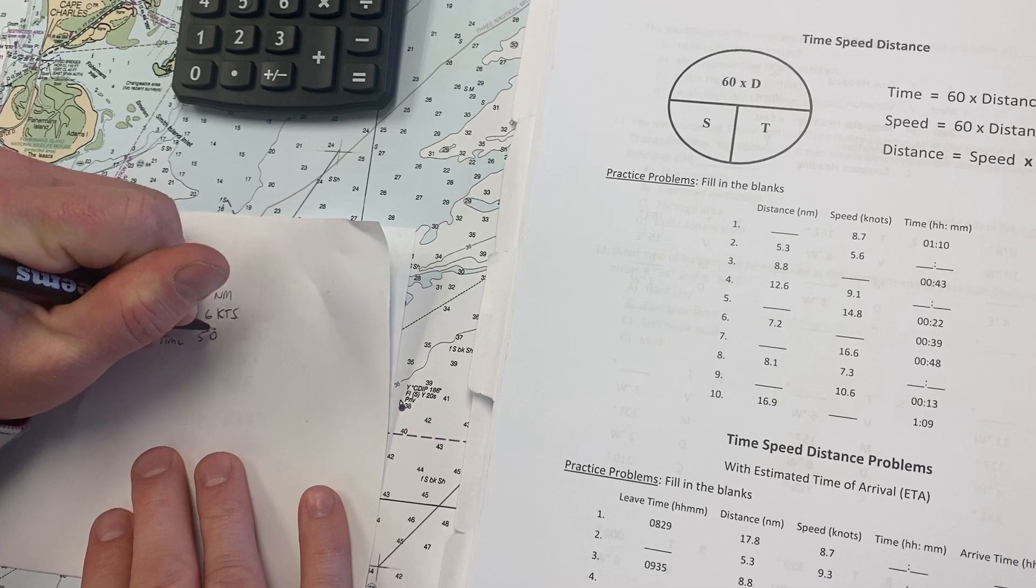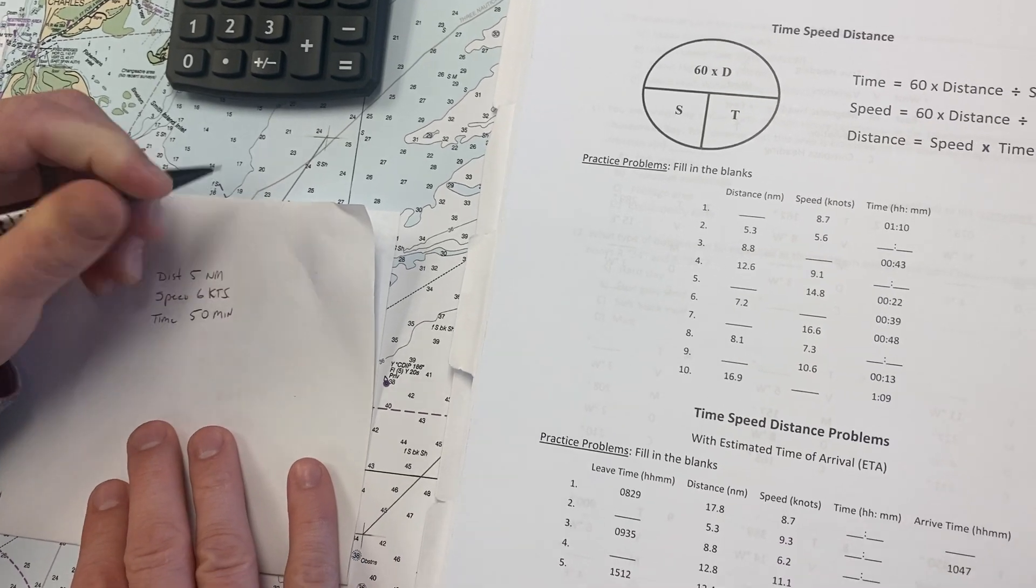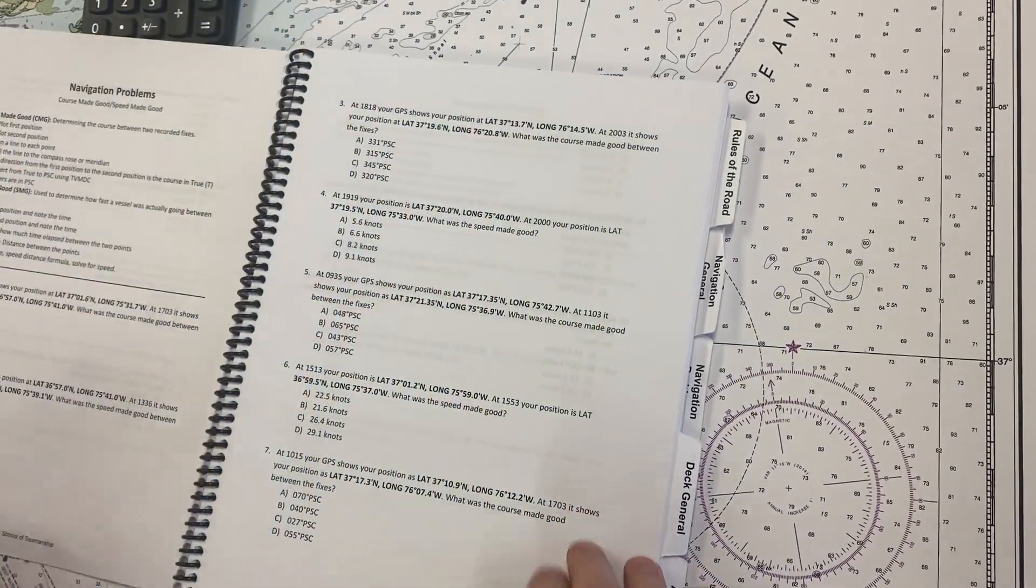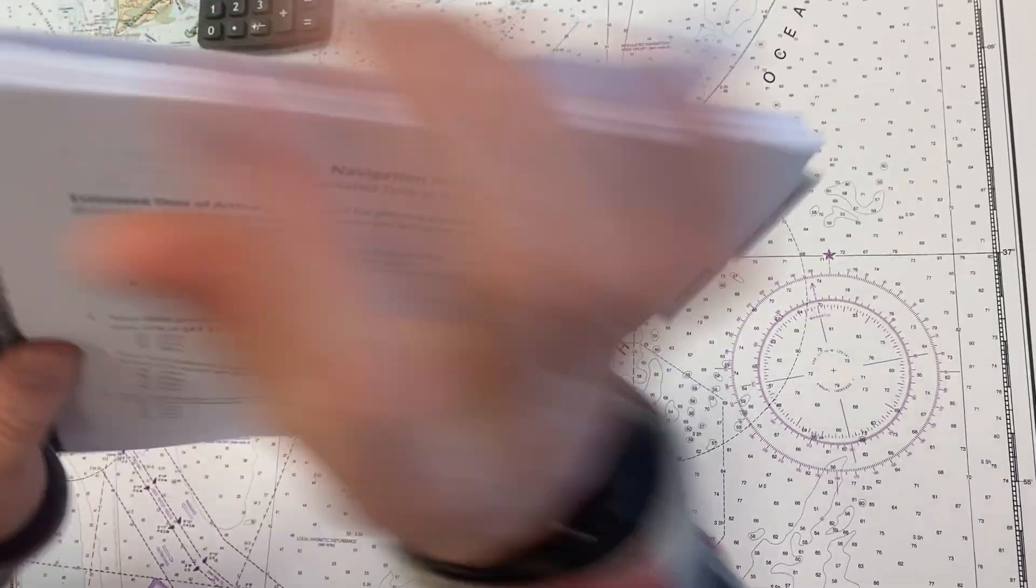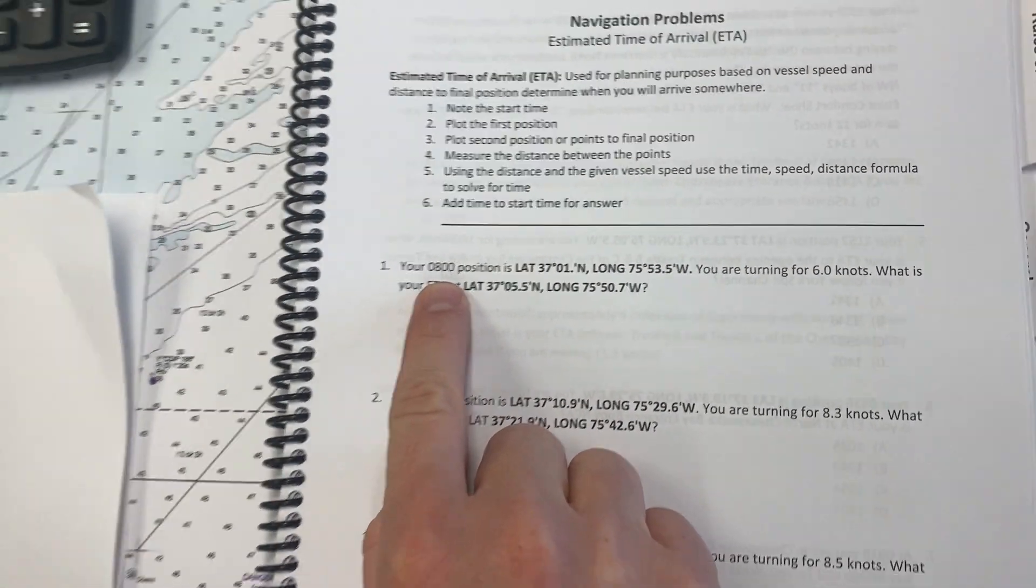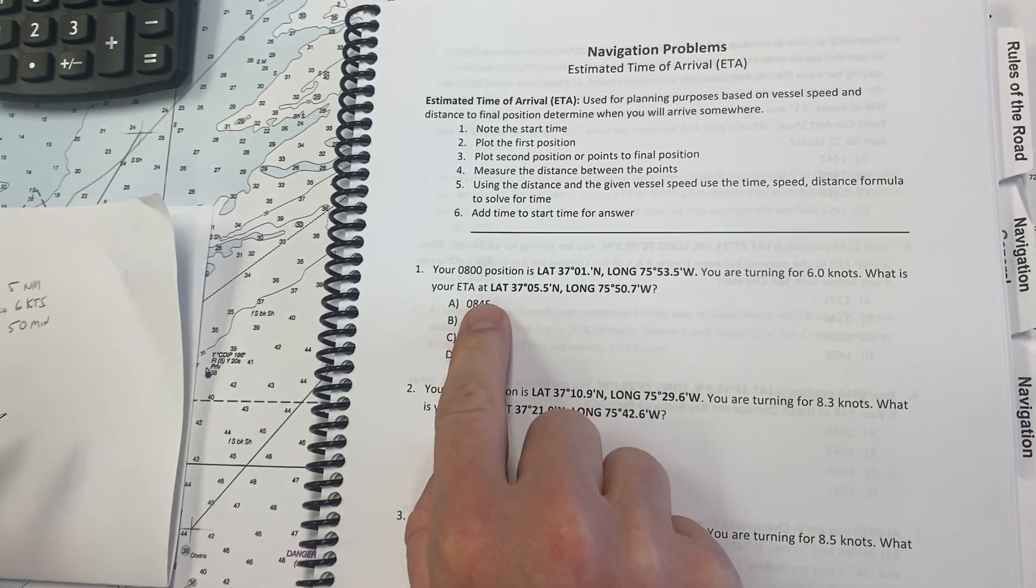So, we have 50 minutes. And that's the time that we need to add to the departure time. Let's go back and look at the departure time. If we left at 0800, and it took us about 50 minutes to get there.